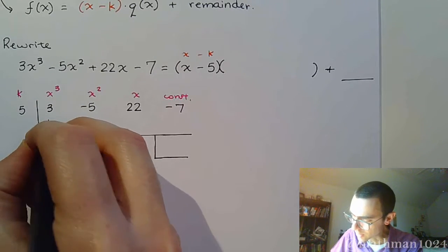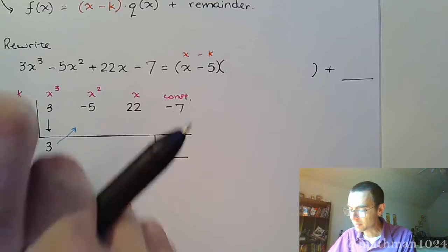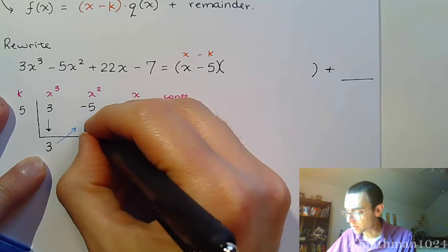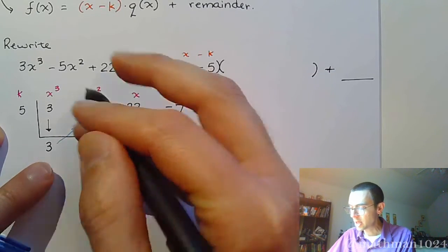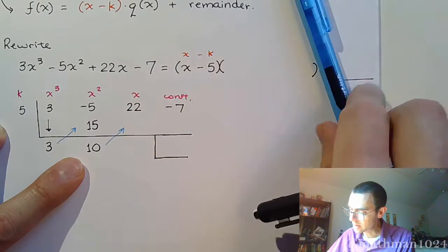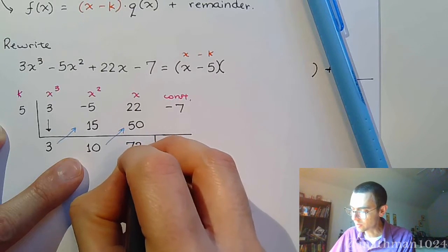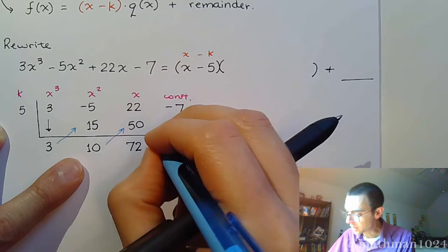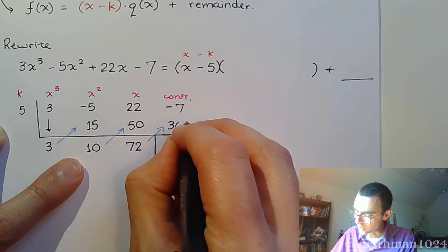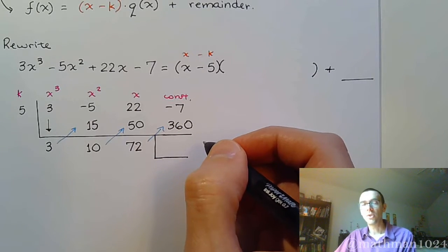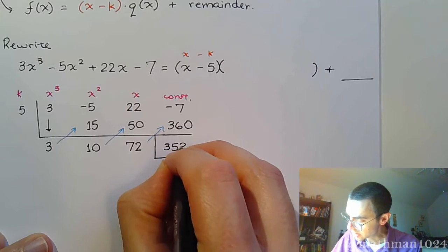Synthetic division says bring down the 3, then it's all about multiplying and adding. Multiply 3 times the k value of 5, we get 15. Negative 5 and 15 is 10. Multiply times the k value again — that's 50 — so we end up with 72. And now we multiply times 5 one more time and we end up with 360. And 360 combined with negative 7 gives us 353.